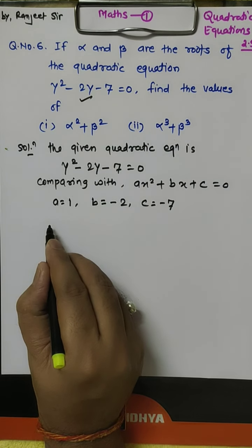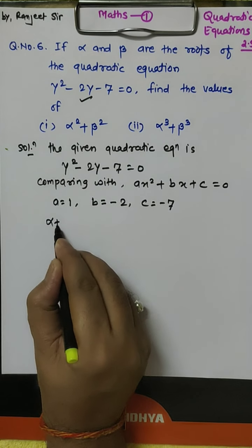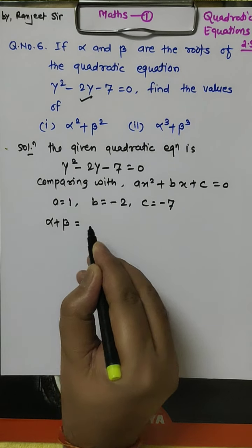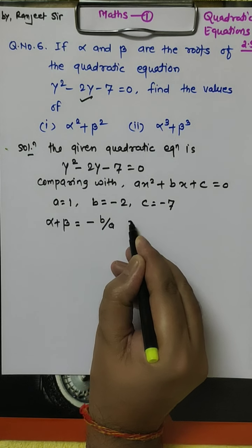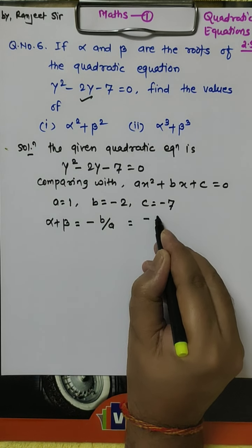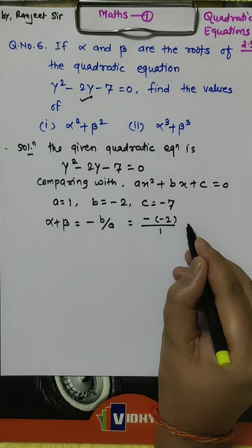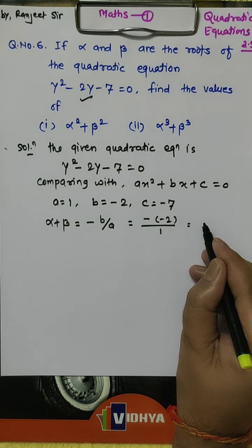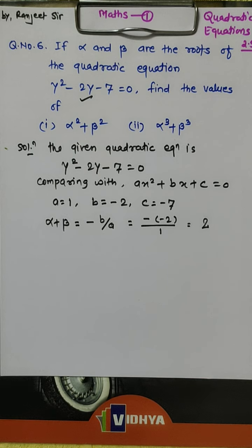Now we will find the sum of the roots, that is alpha plus beta. Alpha plus beta is equal to minus b by a. b is minus 2, divided by a which is 1, so minus times minus becomes positive: 2 by 1, that is 2.